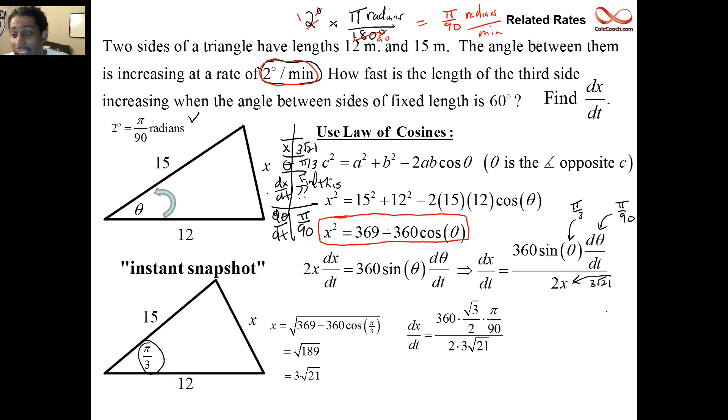Then we have our converted radians. 2 degrees is π/90 radians. So, there we have it. Now, we're talking about the sine of π/3 now. See, the cosine of π/3 was 1/2, but the sine of π/3 is √3/2. So, you see the √3/2, the π/90, the 360, the 2 from down underneath, and the 3√21 from underneath. It's a lot at one time without a calculator.